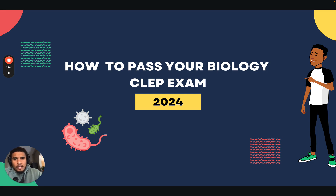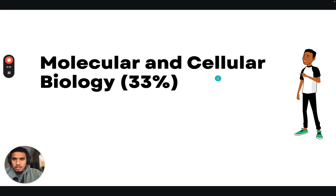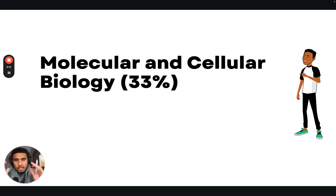Fear not — this is probably going to be a four-part series because this exam covers so much information. With that being said, we're going to go over the entire breakdown from the College Board line item by line item and I'm going to give you exactly what you need to know for each line item. So molecular and cellular biology — we're going to start here. It's 33% of your exam, obviously a big chunk, there's no getting around that.